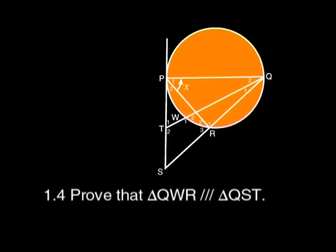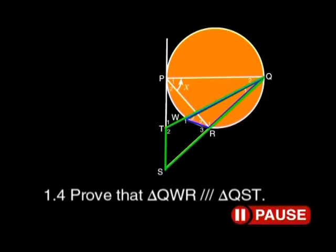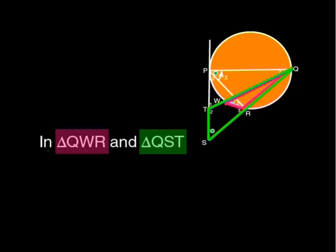We are ready for question 1.4. Prove that triangles QWR and QST are similar. Can you remember what that means? Their corresponding angles are equal? Yes. This question is almost done before we even start. All we need to do is to prove two angles equal and the third one, therefore, has to be equal. Have a look at the two triangles outlined in the diagram.